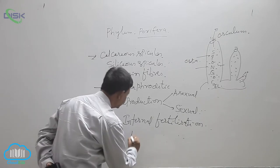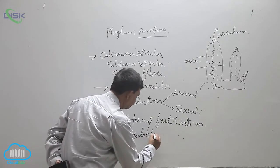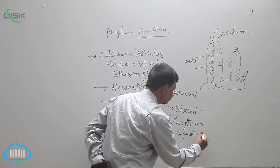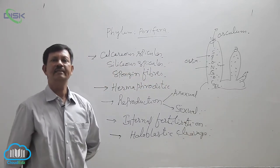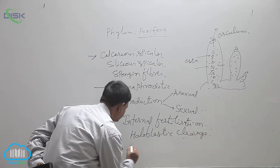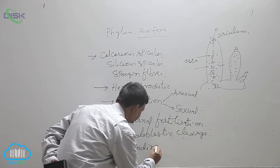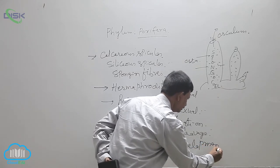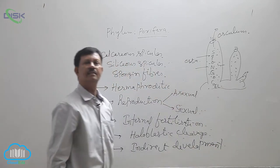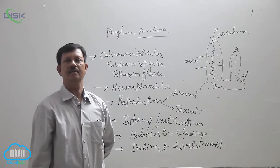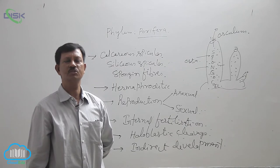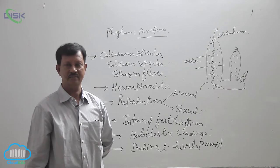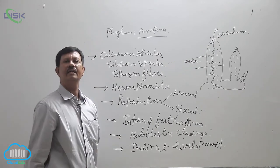Its cleavage is holoblastic cleavage and the zygote develops. The zygote does not develop directly into adults. There are so many differences between the larva and adult. That is why it is known as indirect development based on the larva.